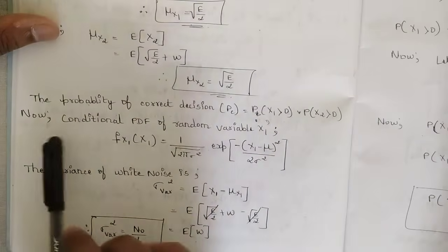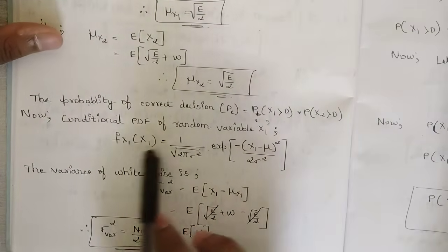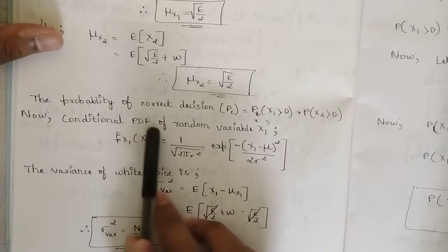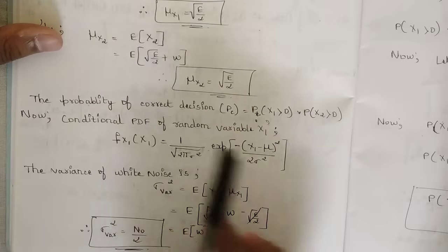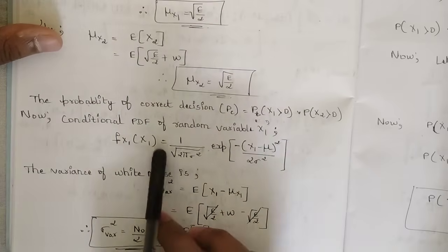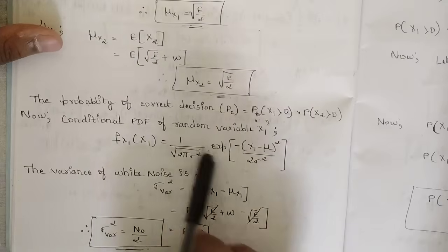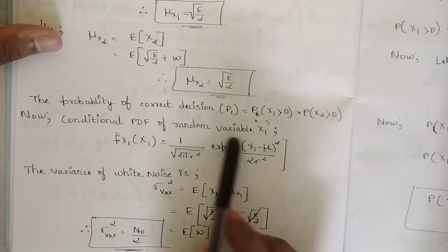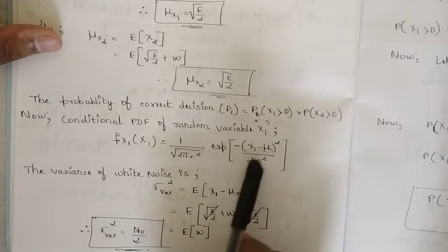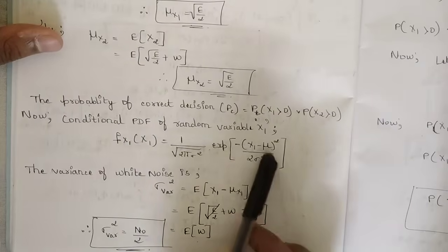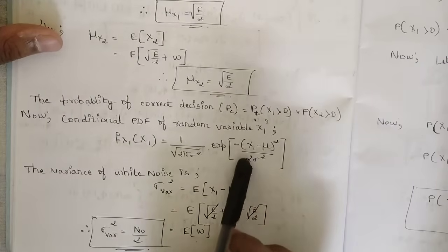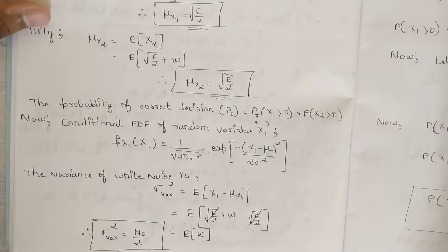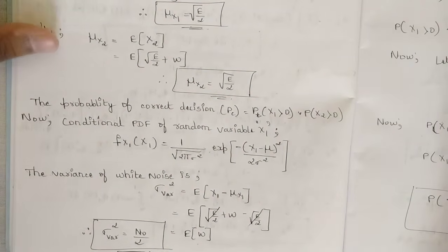For this, the conditional PDF is given by f_{x1}(x1) = (1/√(2πσ²)) × e^(−(x1 − μ)²/(2σ²)), where σ is the standard deviation with respect to the white noise generated in the observation.